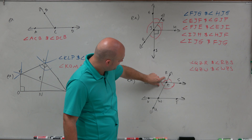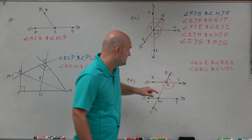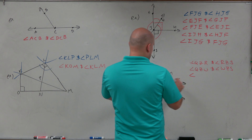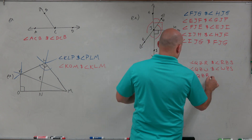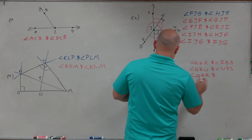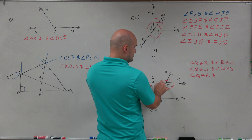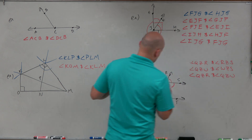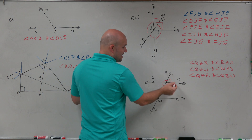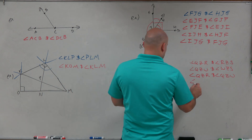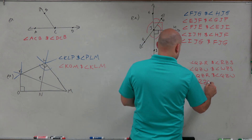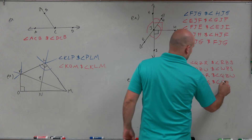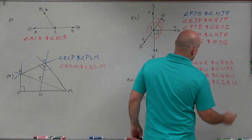We also have angle QZR and angle QZW as a supplementary pair, and angle RZS and angle SZW as another supplementary pair. So there are four supplementary angle pairs at this vertex.